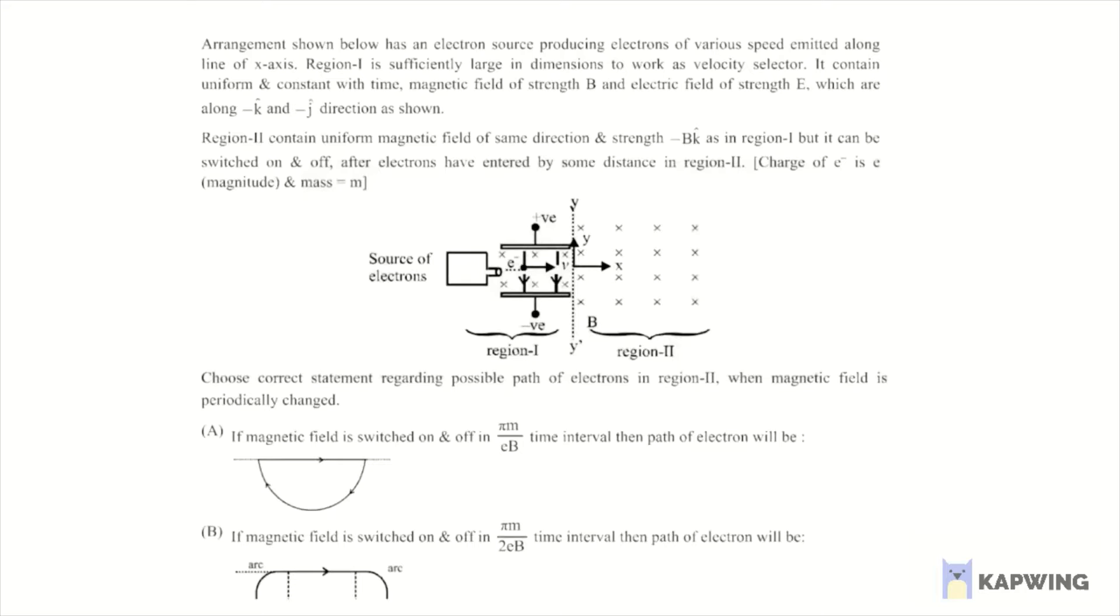In this question, a paragraph is given. An arrangement shown below has an electron source producing electrons of various speed emitted along the line of the x-axis.